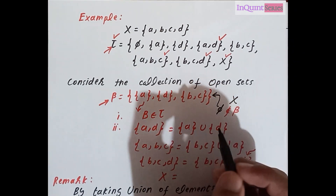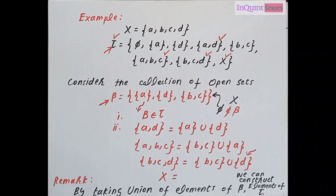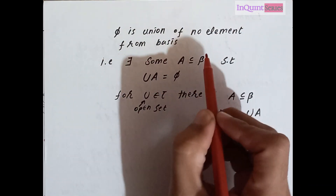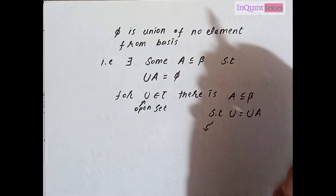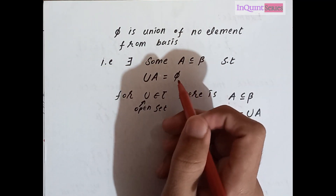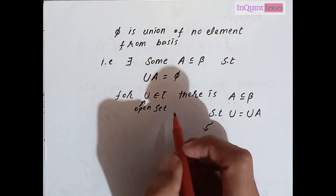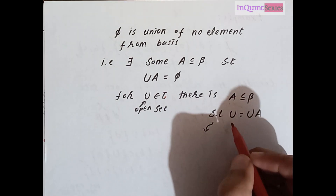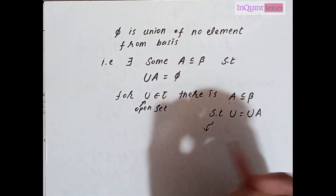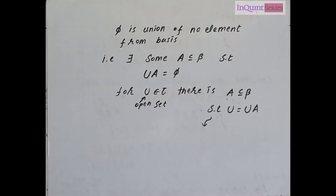The answer is that phi is also present in that subcollection but it is hidden. Note that phi is the union of no elements from the basis — that is, there exists a subset A of beta such that the union of A equals phi. So if every open set in tau requires a subset A of beta whose union gives that open set, this works. That is why in many cases we include phi in the basis set, and sometimes we also include x in the basis set.